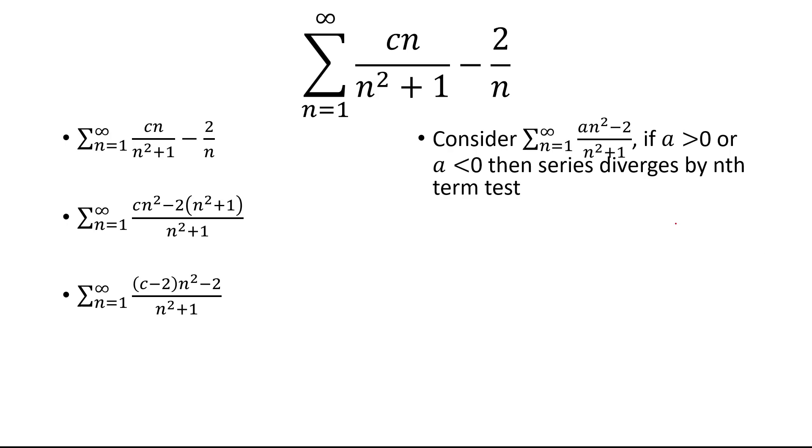Because think about it. What is the limit as n approaches infinity of an squared minus 2 over n squared plus 1? Well that's just going to be a. So we said a is either positive or negative. It's not equal to 0. So this limit doesn't equal to 0. So we say it diverges.